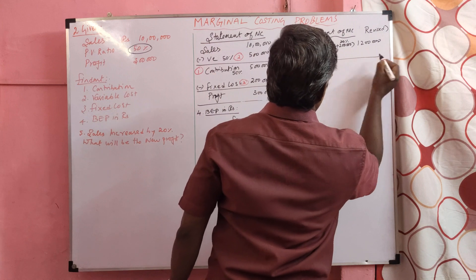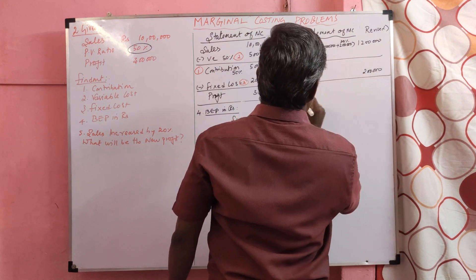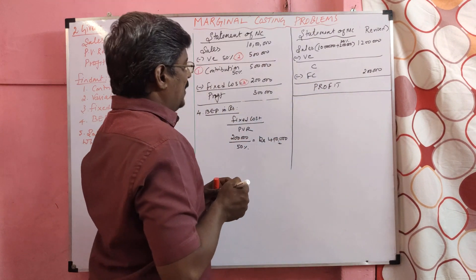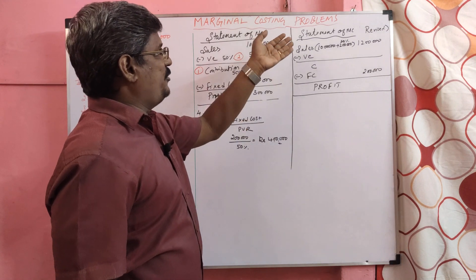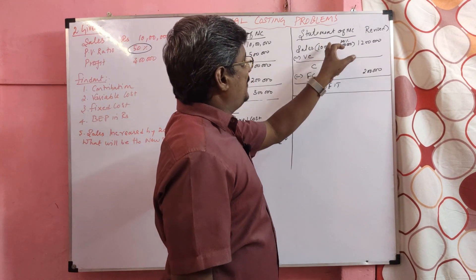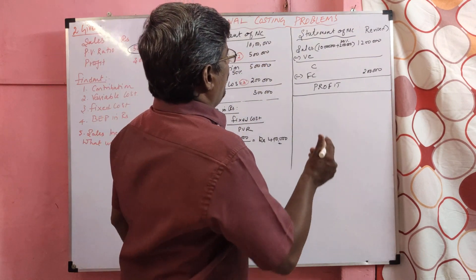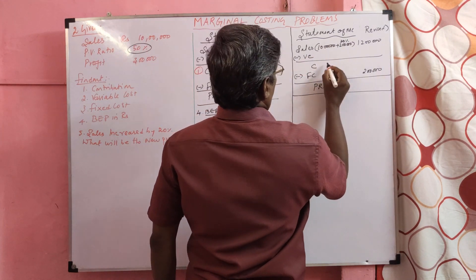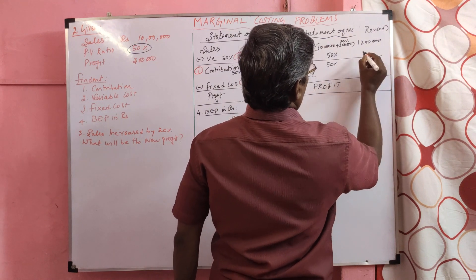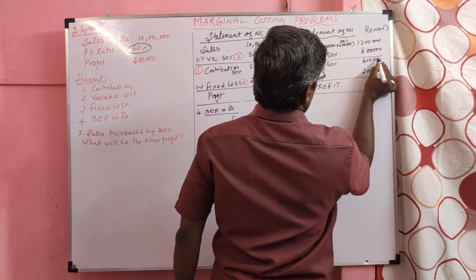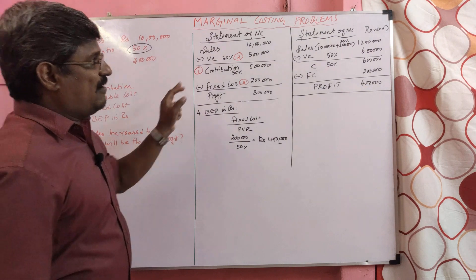Variable cost and contribution are not given, so we can use PVR as contribution. PVR is 50%, so contribution is 50% of 12 lakh. Variable cost is also the remaining 50%. Fixed cost remains 2 lakh. So our profit is 4 lakh. If we increase sales by 20%, our new profit is 4 lakh.